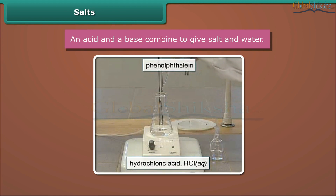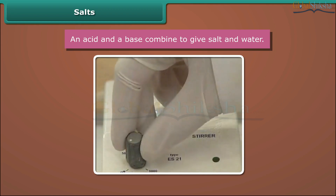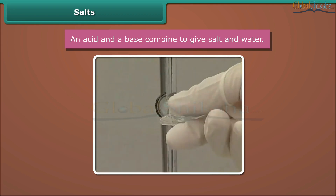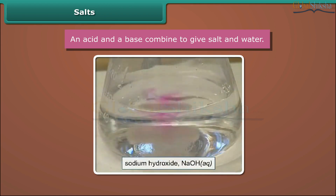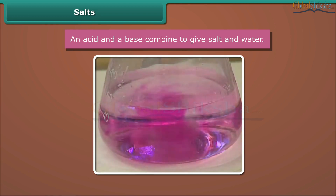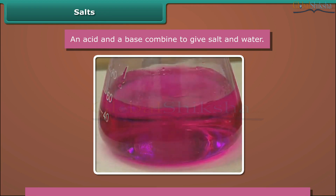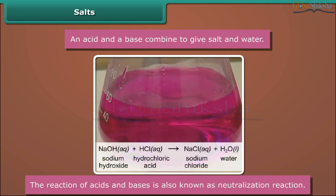An acid and a base combine to give salt and water. Add some phenolphthalein to dilute hydrochloric acid. The indicator remains colorless in the acidic solution. Now we add a solution of sodium hydroxide in small portions. At a certain point, the indicator changes color, which means that the acid is completely neutralized by the sodium hydroxide and some excess hydroxide ions are present in the solution. The reaction produces salt, sodium chloride, and water. The reaction of acids and bases is also known as a neutralization reaction.